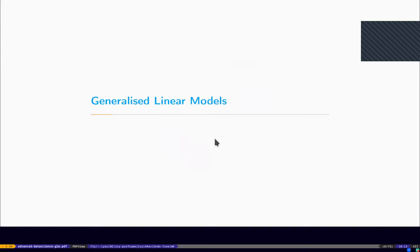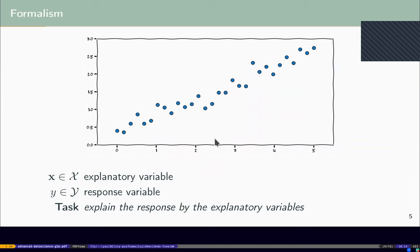The model we picked for this is called generalised linear models. These are really models from statistics, which raises the question: what's the difference between statistics and machine learning? I don't think there is one. The only difference is there are two different groups of people working on the same technology. In terms of the pure mathematical content, it's exactly the same thing.